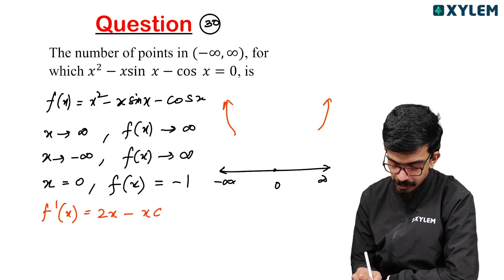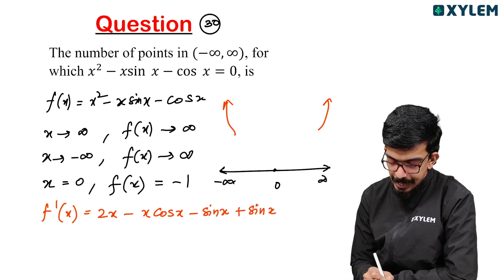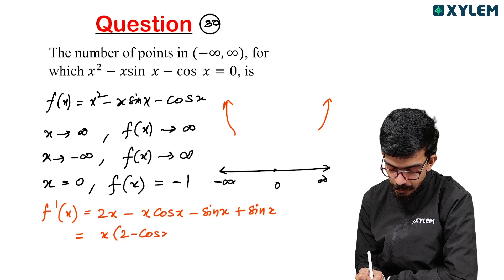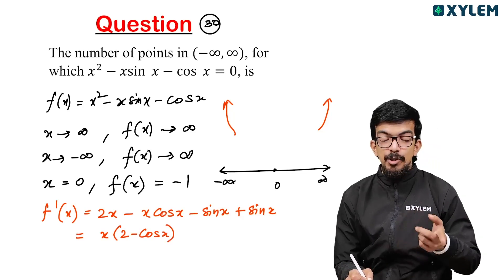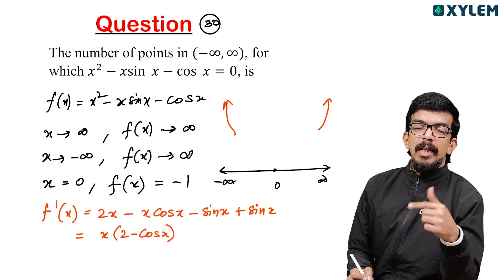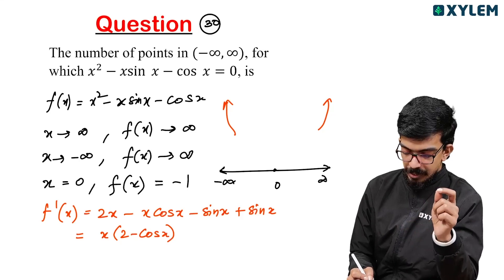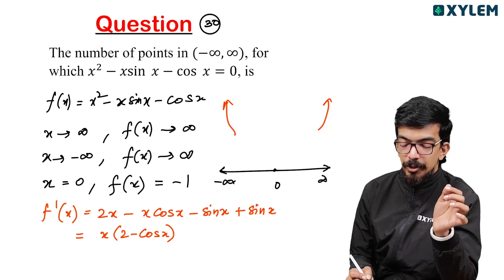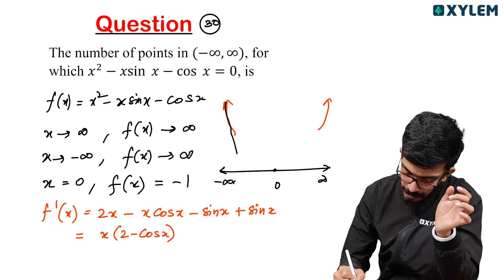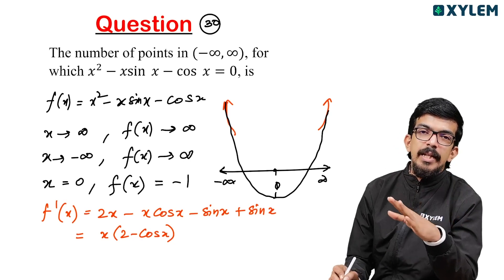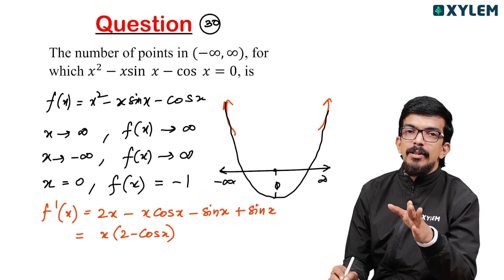Taking the derivative: f'(x) equals 2x minus x·cos(x) minus sin(x) plus sin(x) minus minus cos(x), simplifying to x times (2 minus cos x). Since 2 minus cos(x) is always positive, for x greater than 0, f'(x) is positive (increasing), and for x less than 0, f'(x) is negative (decreasing). So x equals 0 is a minimum, where f(0) equals minus 1 is less than 0. Since the function goes to infinity on both sides and the minimum is negative, the equation has exactly 2 solutions.